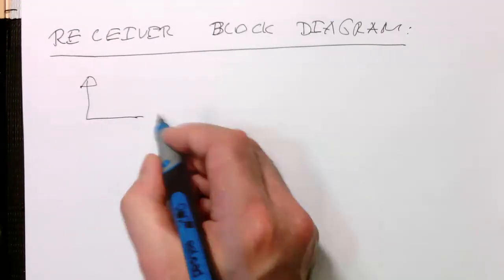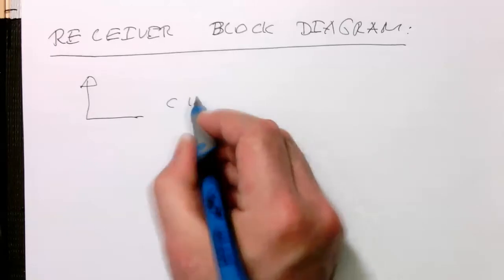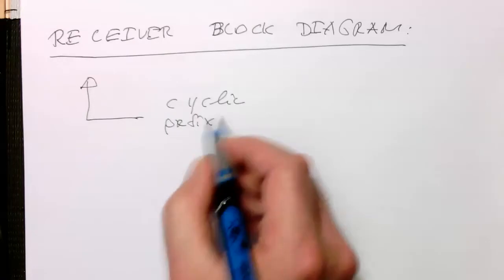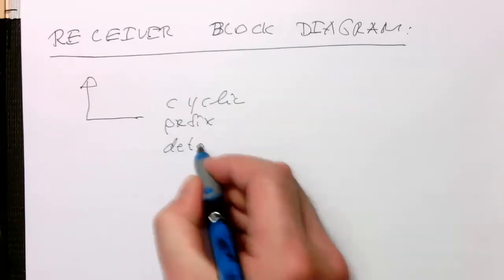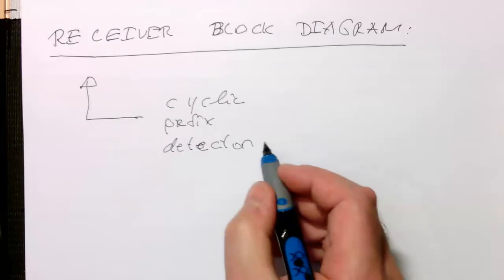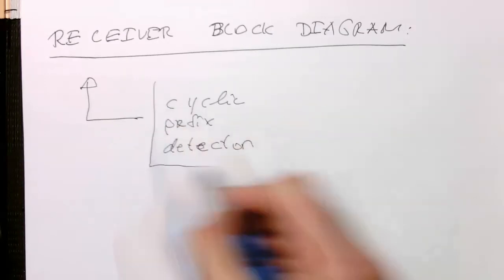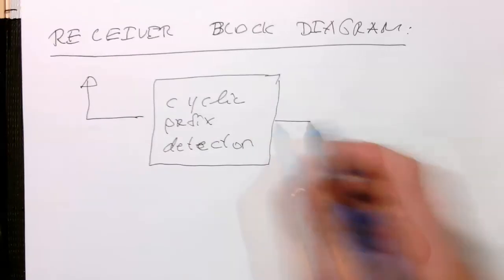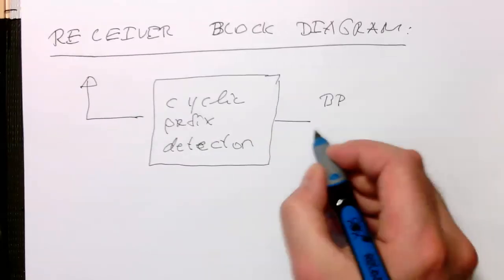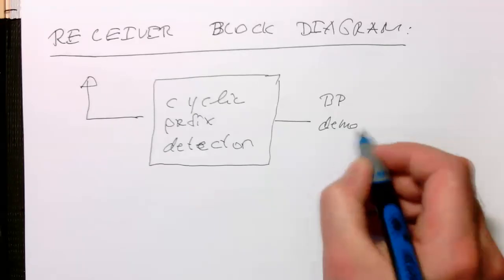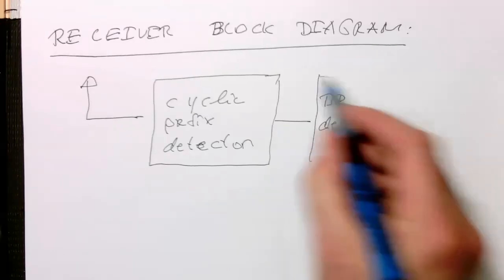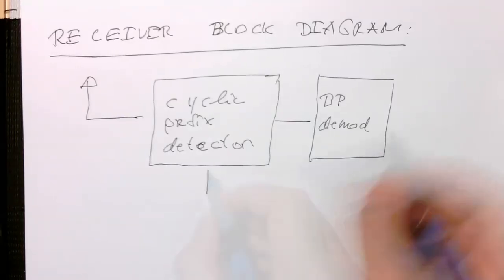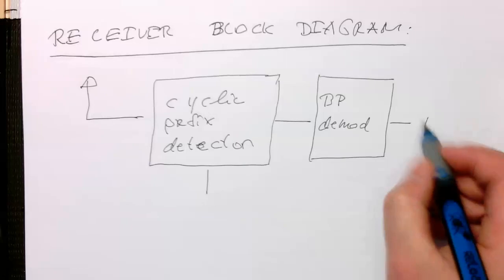We need to have first the cyclic prefix detector, and we receive this here, and then we've got our bandpass demodulator. And then the cyclic prefix detector tells the Fourier transform here.